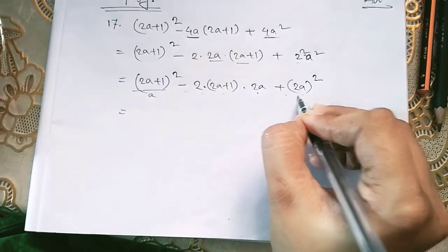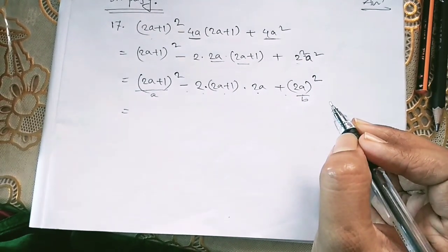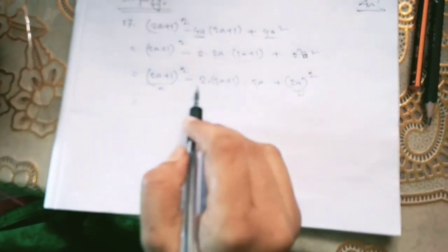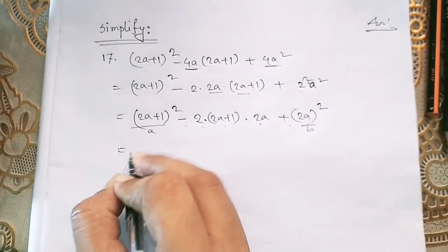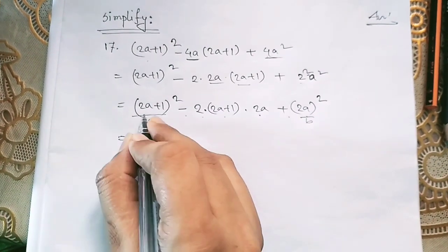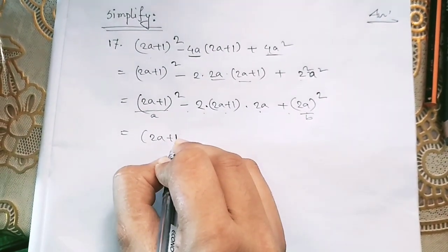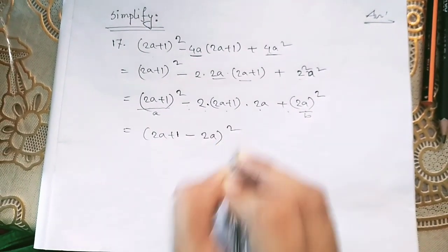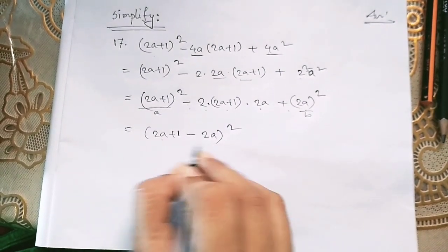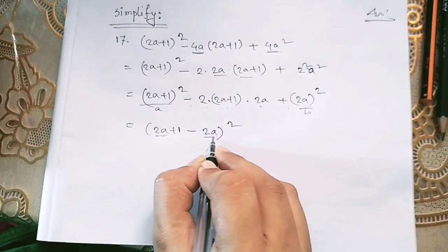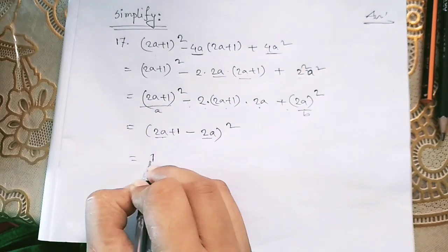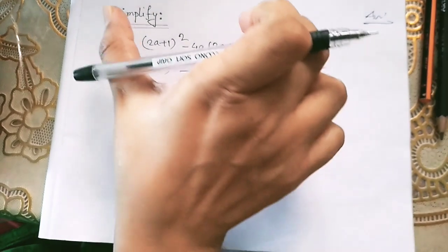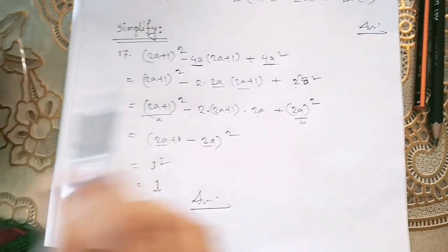Here we can apply the formula (a-b)² where (2a+1) is a and 2a is b. So we apply the formula and write (2a+1 - 2a)². Then (2a) and (-2a) cancel each other out, and we get 1² = 1. This is the answer. After simplification we got only one term.